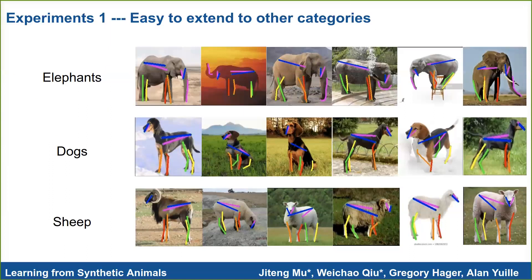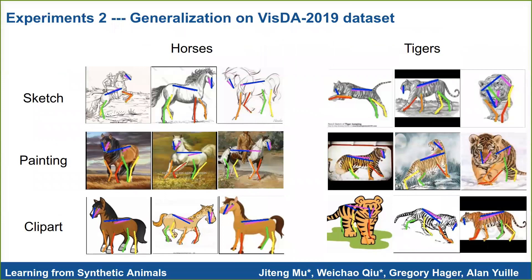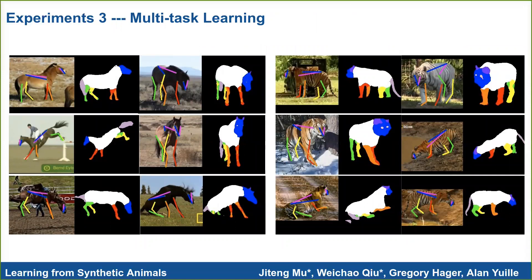Our approach is also easy to extend to other animal categories and rare keypoint configurations — you can see we can also predict the keypoints of elephants' trunks. We demonstrate our trained models generalize well on different domains on the Visual Domain Adaptation Challenge dataset. We also modify the stacked hourglass architecture to enable multi-task learning and demonstrate models trained this way can predict semantic parts reliably using just synthetic images. Our dataset and code are publicly available, so please check the website if you are interested.